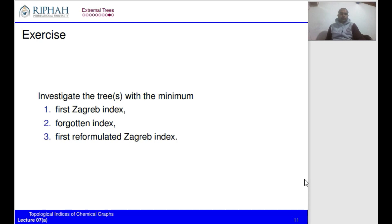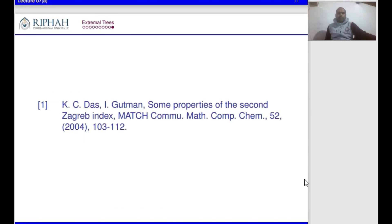For practice, investigate the trees with the minimum first Zagreb index, the forgotten index, and the first reformulated Zagreb index. You can discuss in class, write in the comments, or email me. This result is taken from the paper by Das and Gutman, 'Some Properties of the Second Zagreb Index,' published in 2004. This concludes our short lecture on extremal trees with respect to the second Zagreb index.